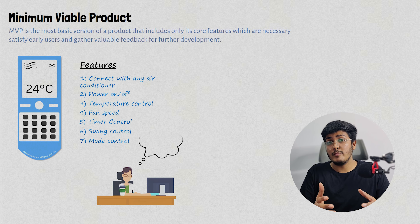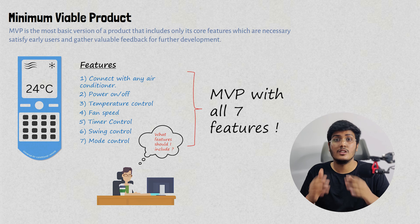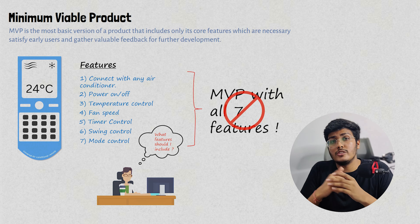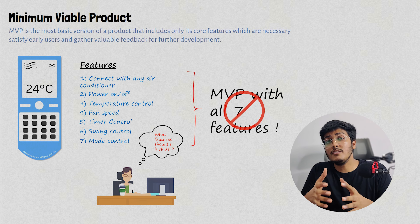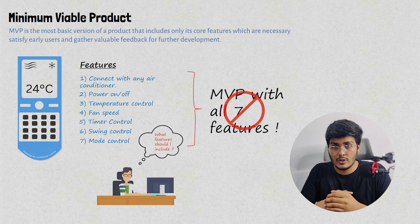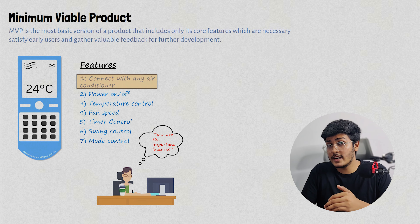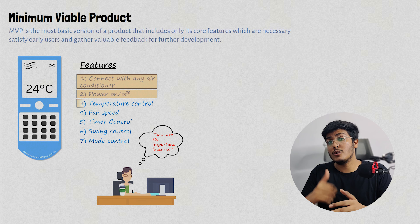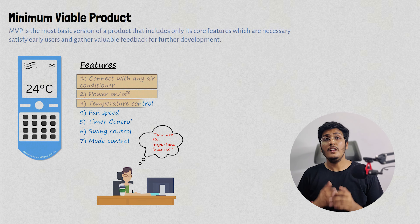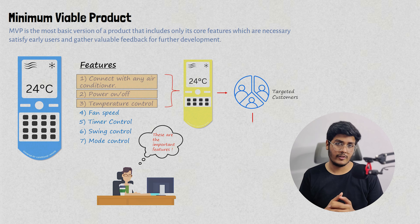Now Jack wants to create the MVP of his product. Will he make the product that contains all seven features? No. Instead of launching the product with all of these features, which will take a lot of time and effort, Jack can focus only upon the core features. The most important features are: one, connect the remote with any air conditioner; two, turn on and off an air conditioner; and three, control the temperature. Now Jack can launch his product with only these three features to his targeted audience and get feedback from them.